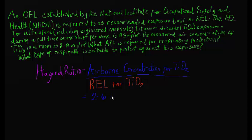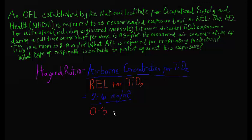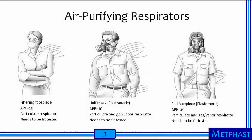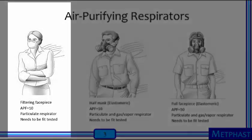Thus, 2.6 mg per cubic meter divided by 0.3 mg per cubic meter gives us a hazard ratio value of 8.7. Learners should choose an APF equal to or greater than 8.7. Therefore, the minimum APF for this exposure is 10. Using the illustrations provided, a suitable respirator against the particulate exposure of titanium dioxide is the filtering face-piece respirator.